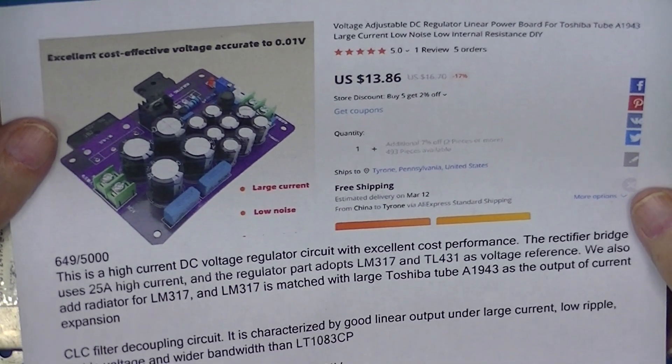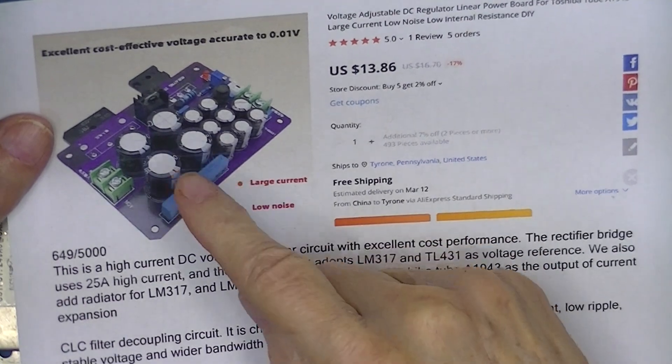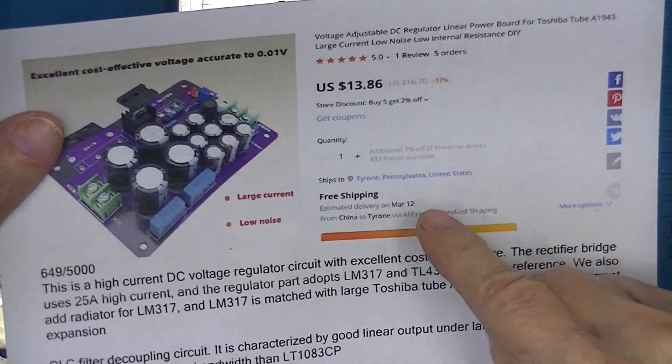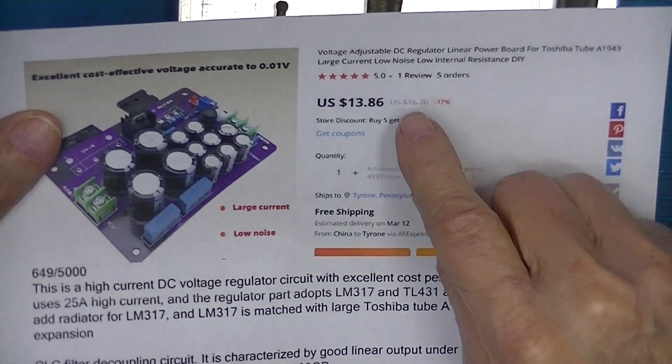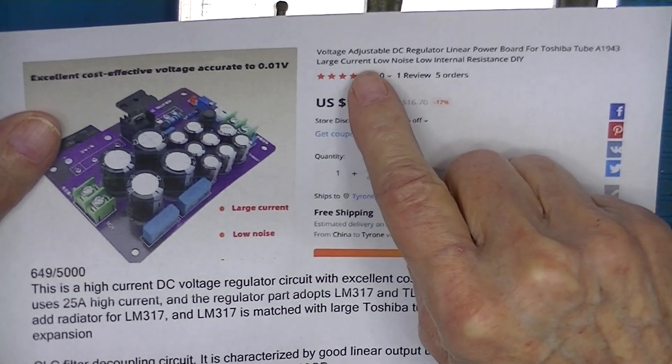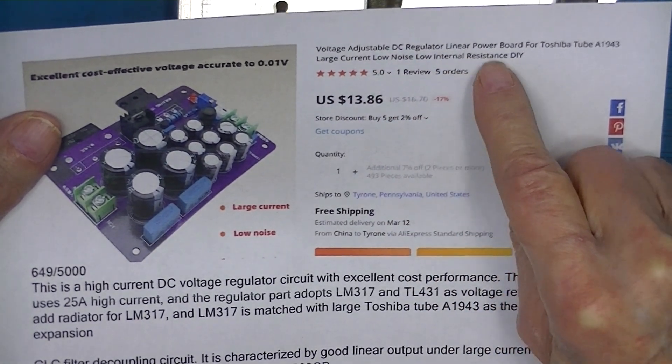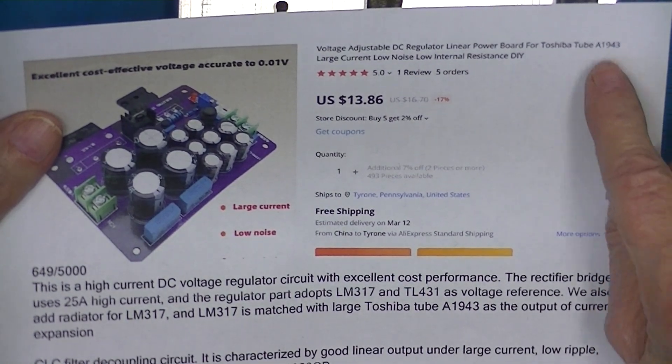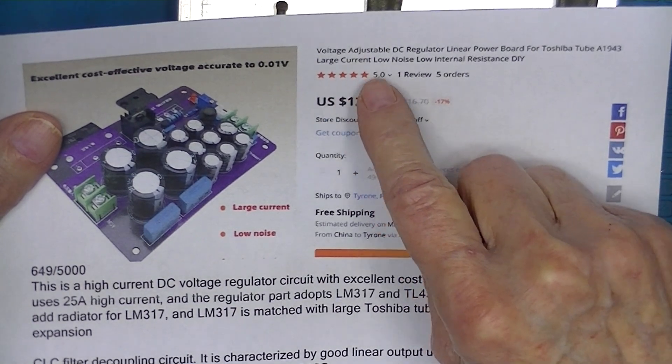I'm going to take a look at this power supply board. It costs $14 from AliExpress and it's advertised as a voltage adjustable DC regulator linear power supply board and mentions a pass transistor, large current, low noise, low internal resistance DIY.